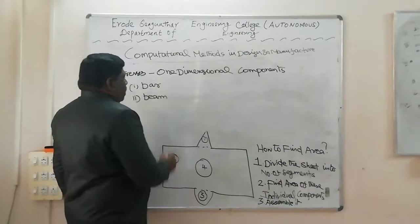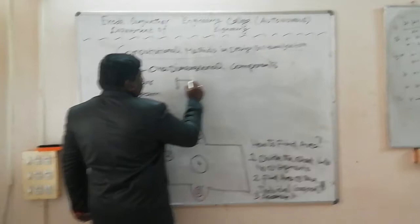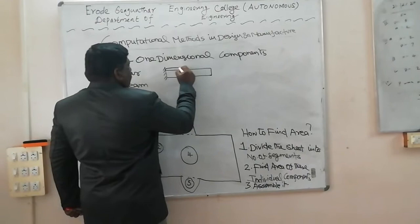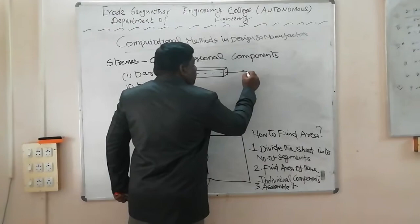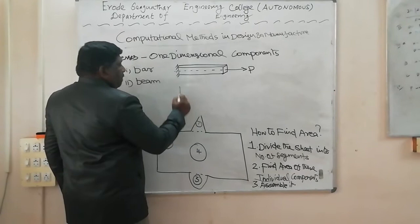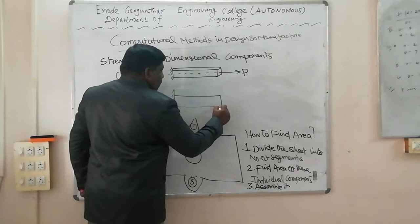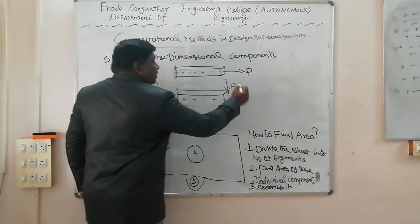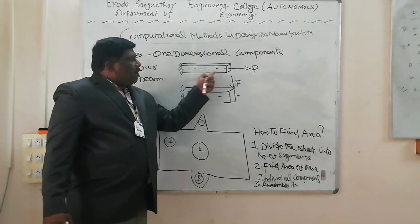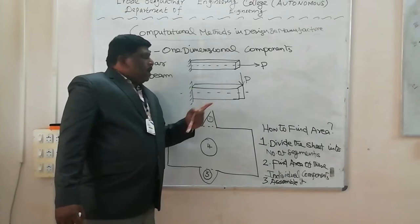Bar and beam are one-dimensional components. Here is the structure with its axis — if the load is applied parallel to the axis of the structure, it is called a bar. Whereas if the load is applied perpendicular to the axis of the shaft, it is called a beam.